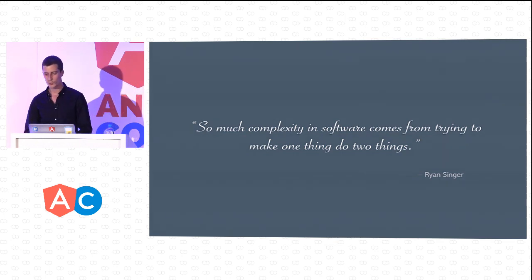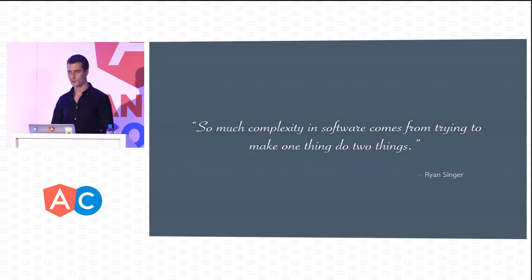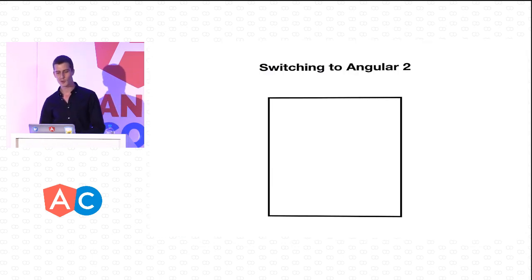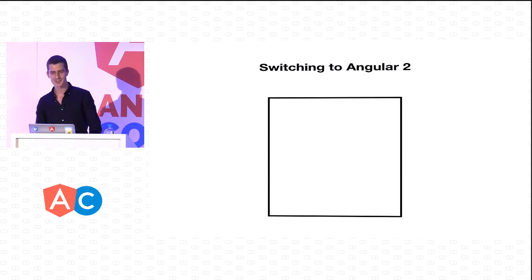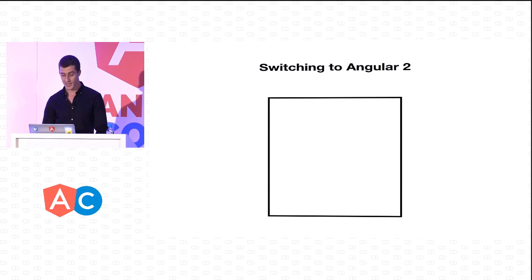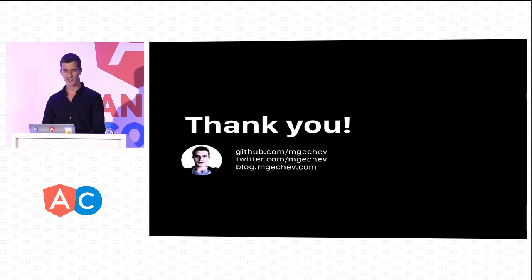I want to finish with a quote from Ryan Singer: 'So much complexity in software comes from trying to make one thing do two things.' That is exactly what we tried to avoid here by extracting cross-cutting concerns into separate modules. I also want to announce that with Packt, we are working on a book called Switching to Angular 2 — it should be released by the beginning of next year. If you have any questions about aspect-oriented programming in Angular and JavaScript, or about switching to Angular, you can find me in the Q&A room after this. Thank you very much for your attention.